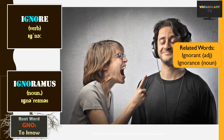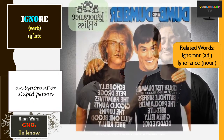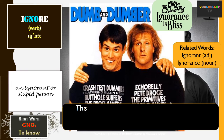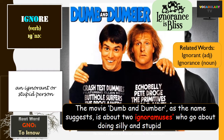Perhaps one word you can add to your vocabulary is 'ignoramus'. The word means an ignorant or stupid person. The best example that comes to mind is the movie Dumb and Dumber, in which two ignoramuses go about doing silly and stupid things — being the living proof of the maxim: ignorance is bliss.